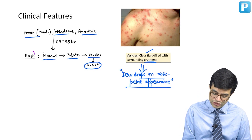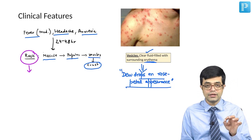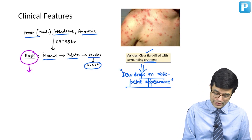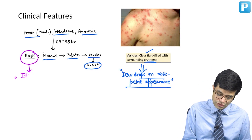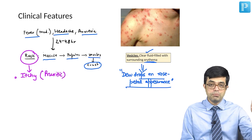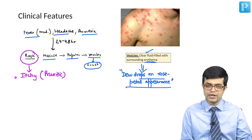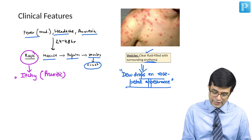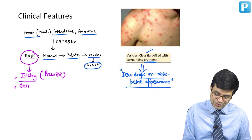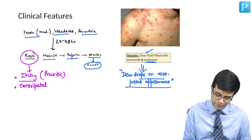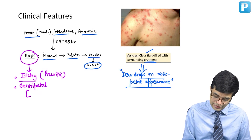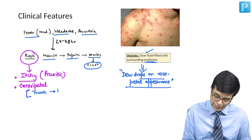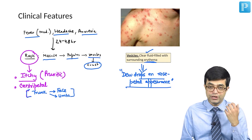Regarding the rash, there are certain characteristics — key words to identify in an exam. First, it is a very itchy, pruritic rash with significant pruritus. Measles and rubella rashes are usually non-pruritic. Second, it is a centripetal rash, meaning it begins in the trunk, then spreads to the face and limbs — starting from the centre and spreading to the peripheries.